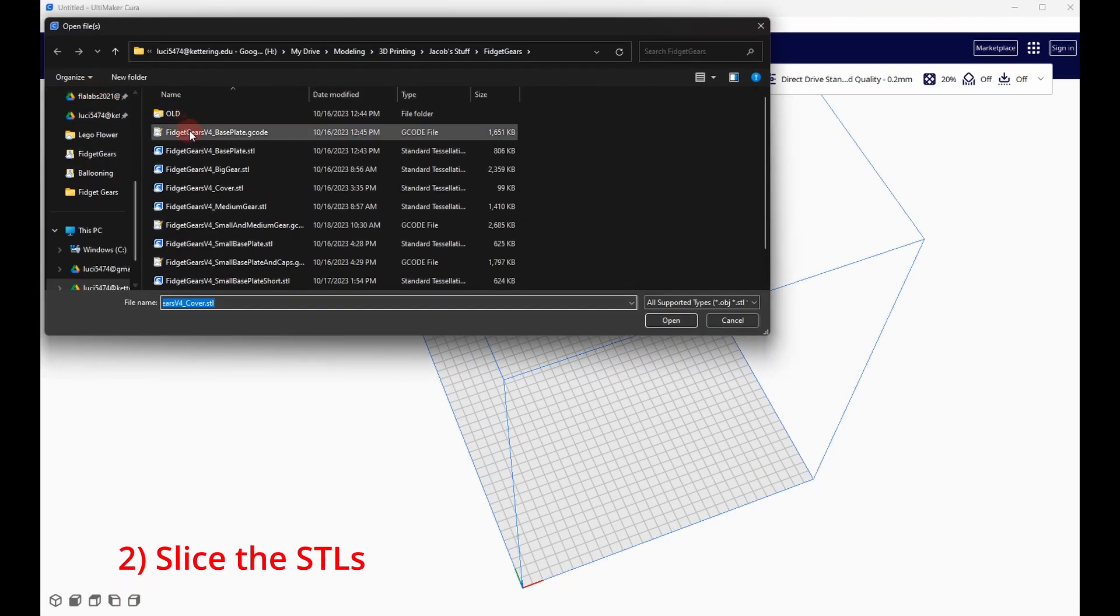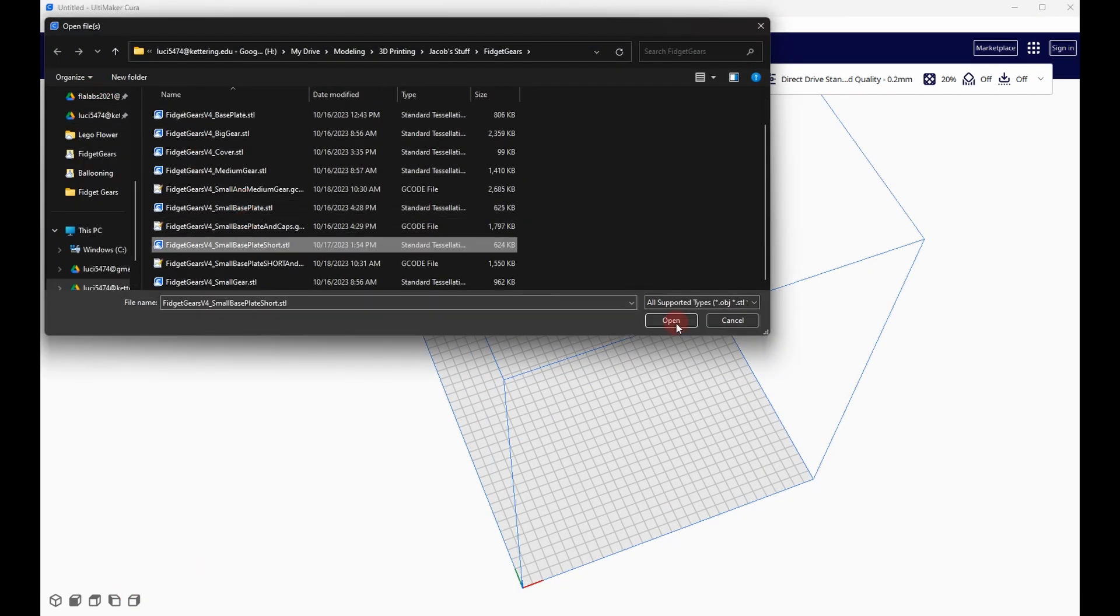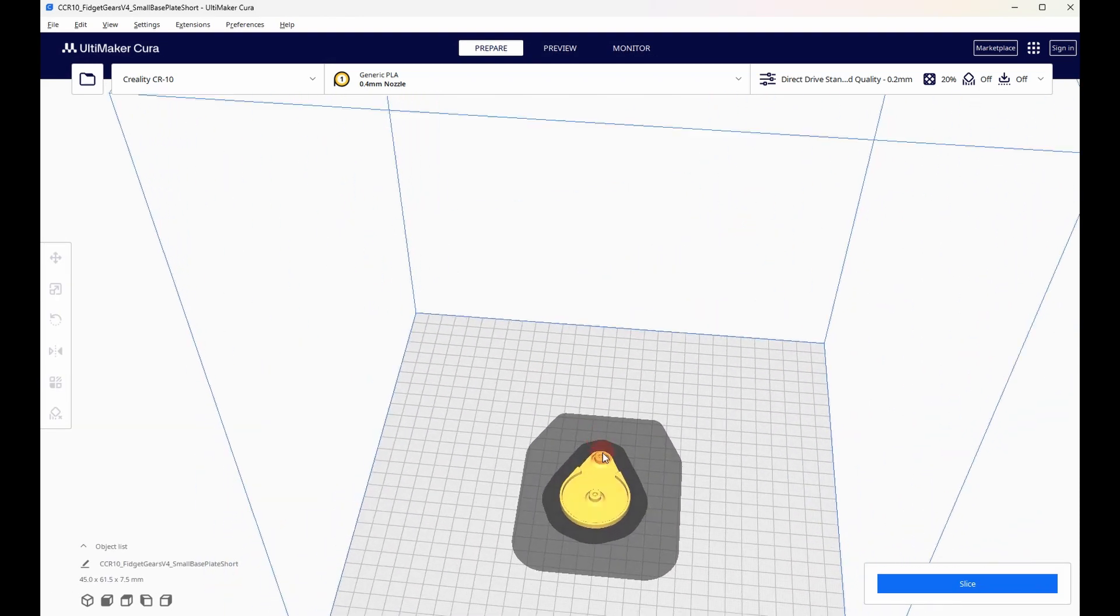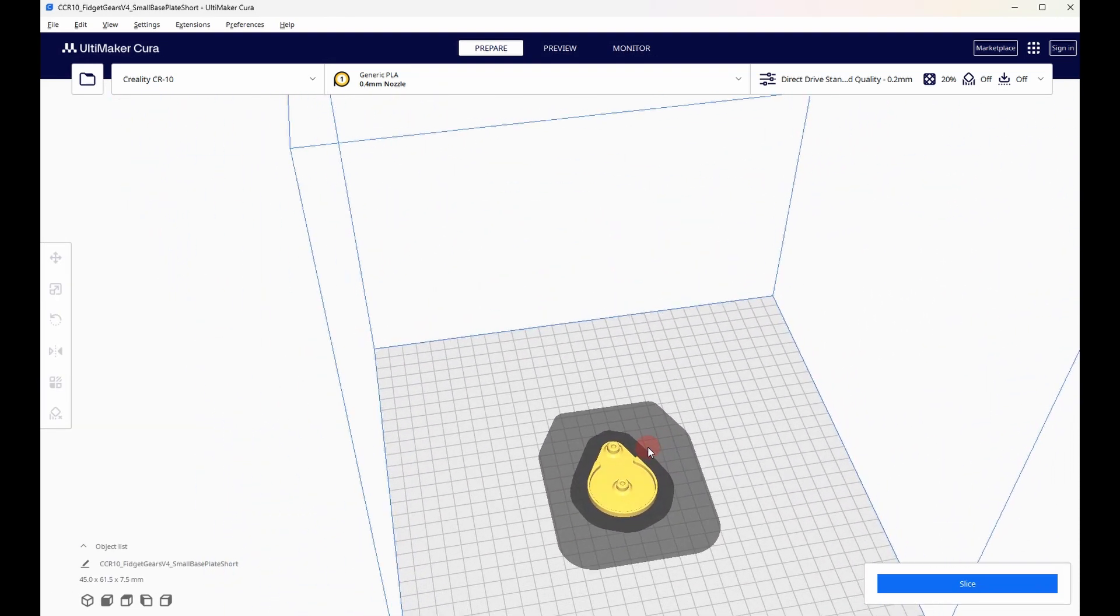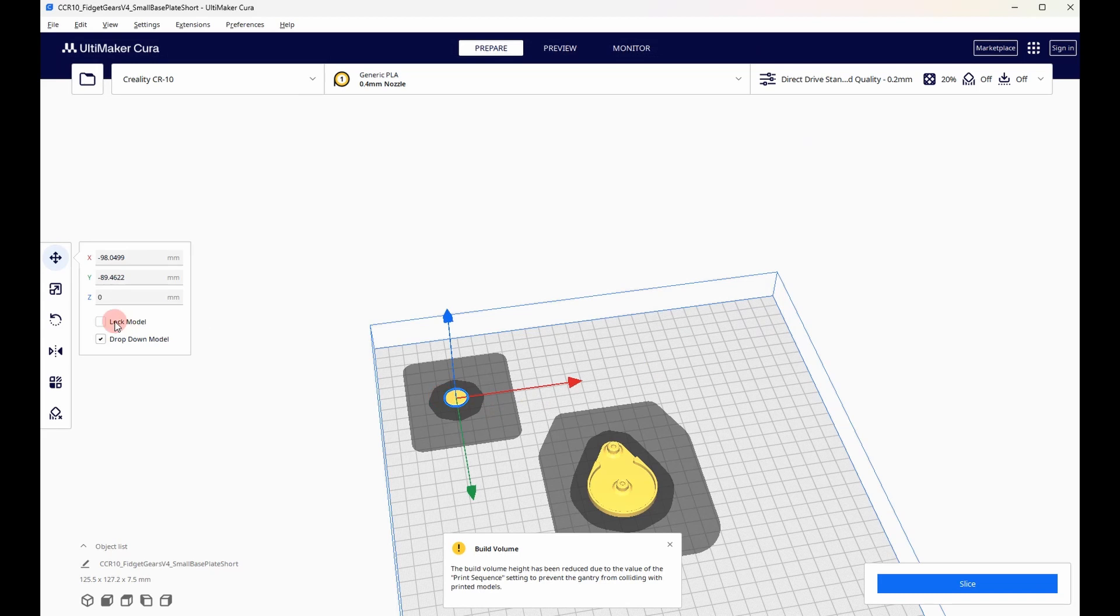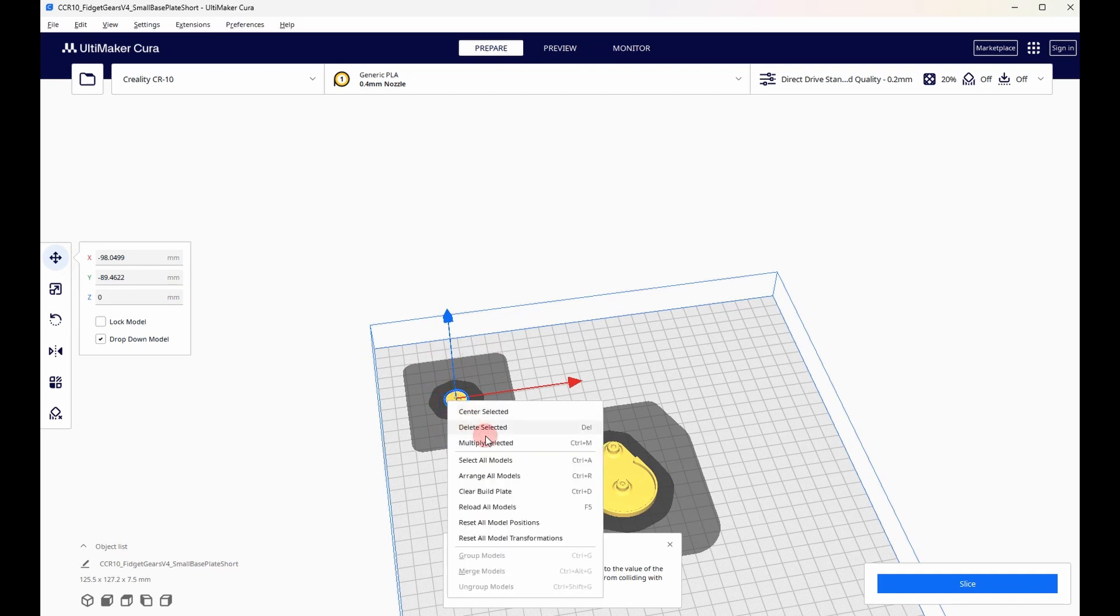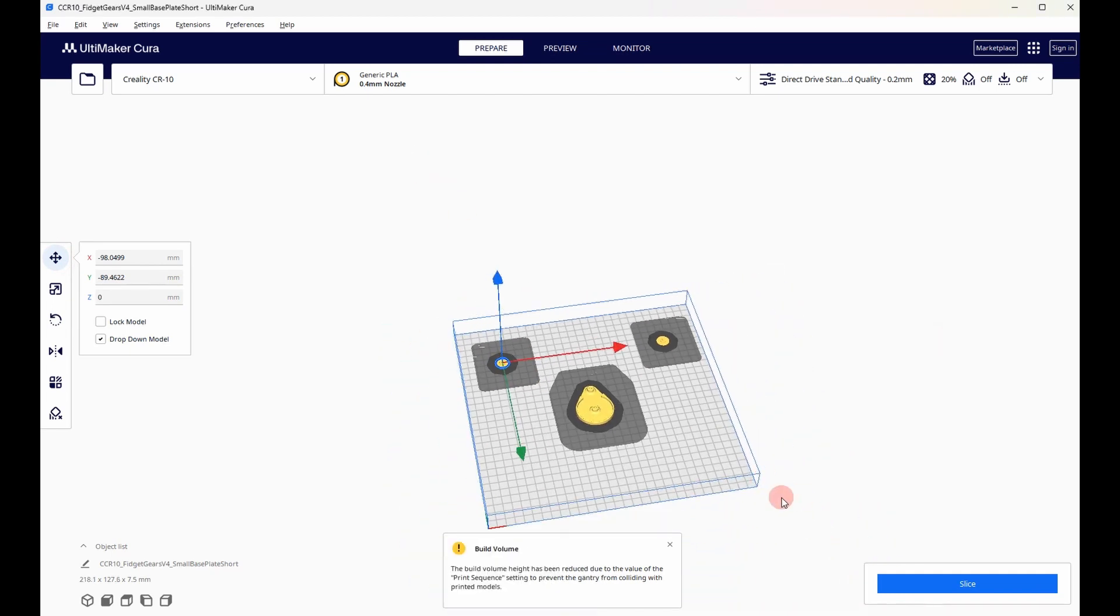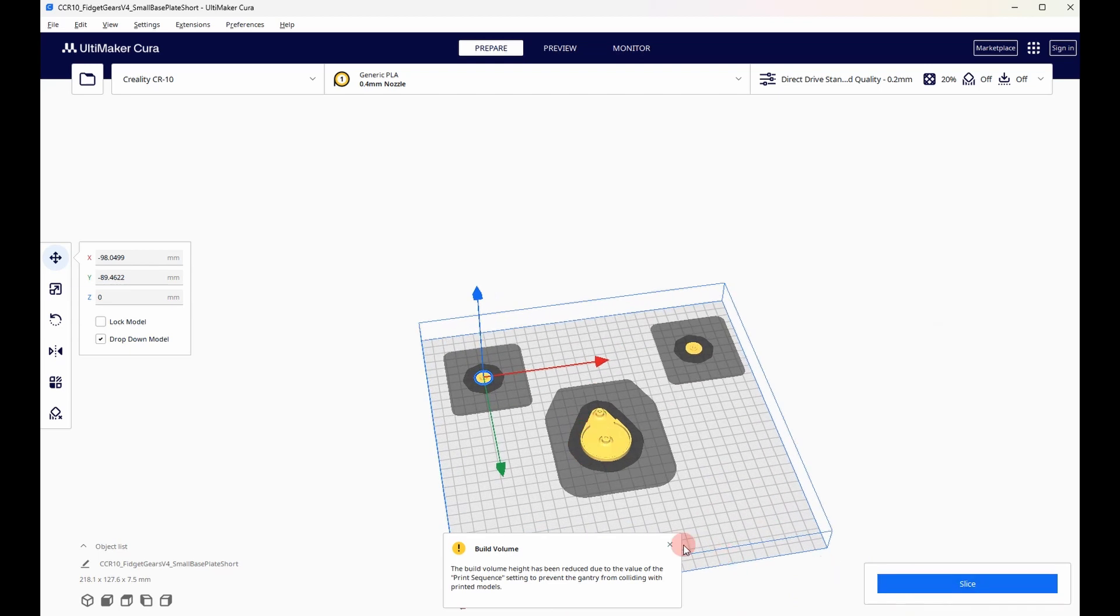First we want to slice the base plate along with two of the covers, one for each gear. I've positioned them on the build plate here to print one at a time. Once you have the parts positioned, you can slice the file and save it to your computer.